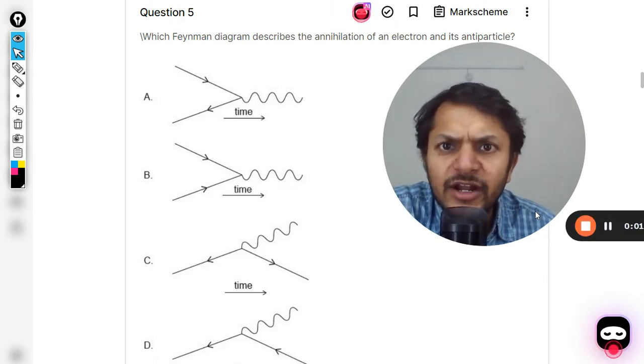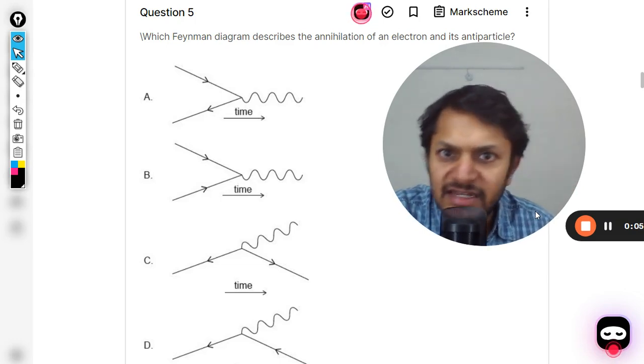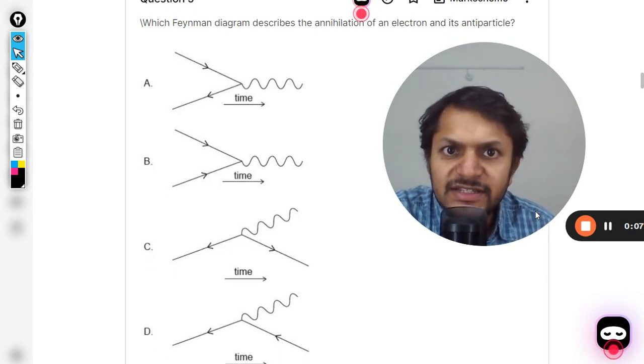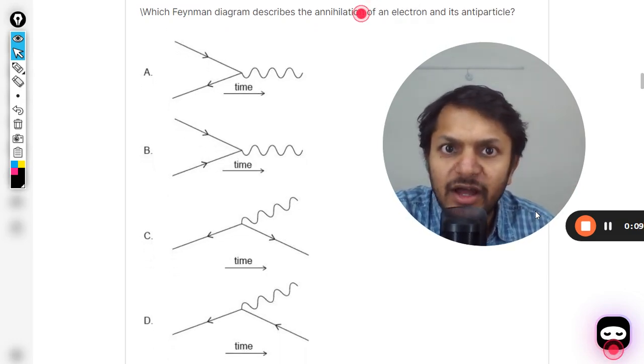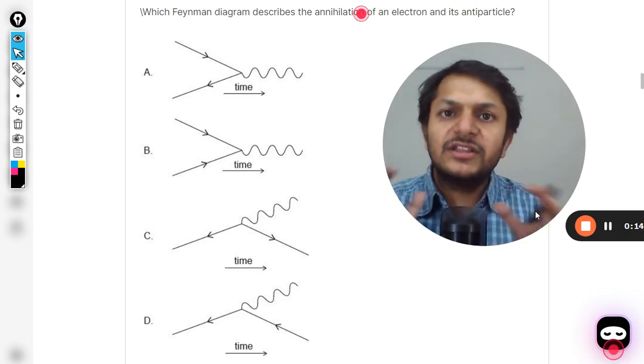What is there in this question? Which Feynman diagram describes the annihilation of an electron and its antiparticle? So my friend, this is talking about the pair annihilation diagram. There are two things: one is called pair production, another is pair annihilation.